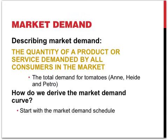Often we are interested in describing more than just the individual's demand for a product, but looking at the market demand. This is the quantity of a product or service demanded by all the consumers in the market. In our example, that is the demand for tomatoes from Anne, Haider and Pietro. How do we derive the market demand? We start with a market demand schedule.